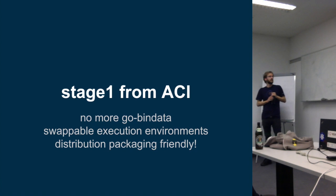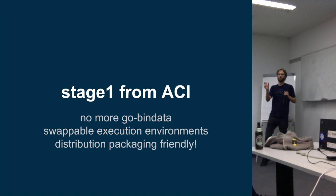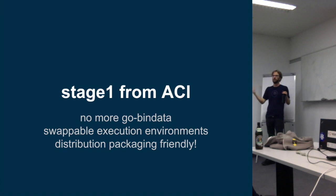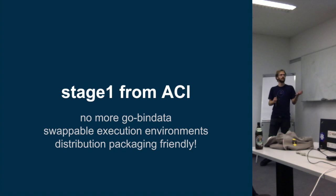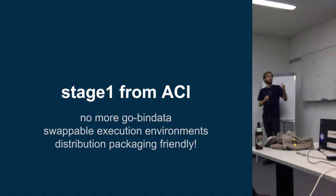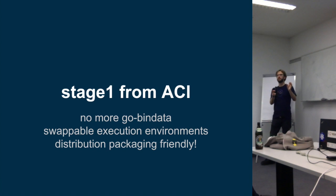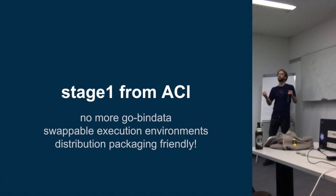Another big recent change: previously we used to bundle the stage one that Rocket uses — currently SystemD and its root FS — into Rocket itself using go-bindata, which encodes a binary as Go code. That was convenient for a simple binary anyone could pull down and run, but it's not feasible when packaging Rocket for distributions. Red Hat is looking at packaging Rocket for Fedora 21 and they need to build it from sources. So we've split out that stage one into just another application container image — the same format as your actual application — which opens up the world of swappable execution environments within Rocket.